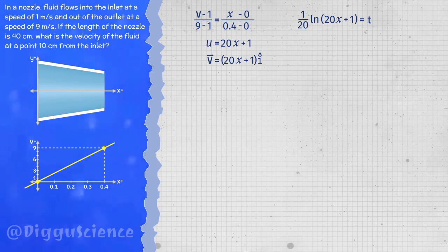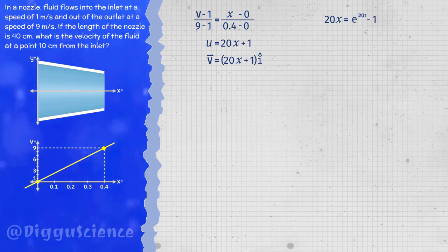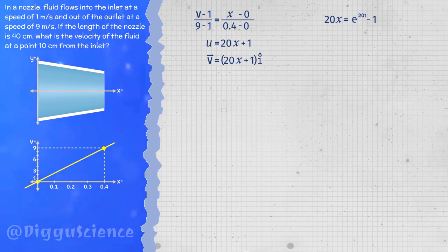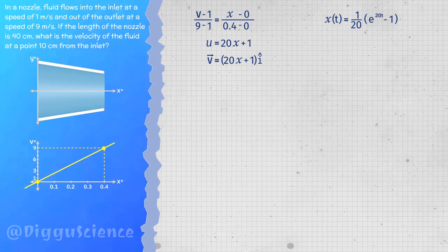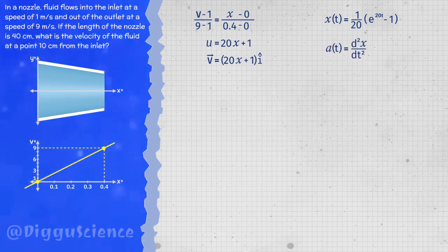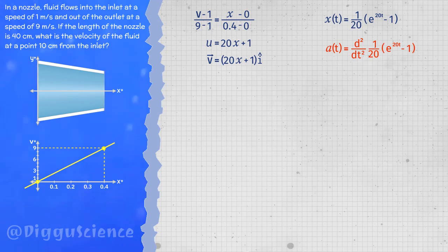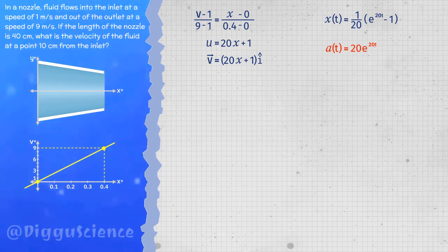The issue is that x appears inside a natural logarithm. Rearranging the equation and shifting values to the other side, we get: x equals (1/20)(e^(20t) minus 1). Since x is a function of t, we can write this as x(t). Now that we have the position, we can calculate the instantaneous acceleration as the second derivative of position with respect to time. The first derivative gives dx/dt, so the acceleration a(t) equals 20·e^(20t).